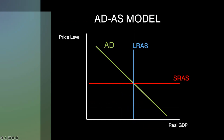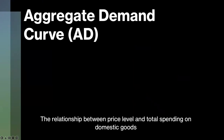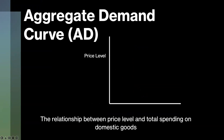The intersection of these three curves is also considered to be the long-run equilibrium. Beginning with the aggregate demand curve, it represents all domestic spending, including that of consumers and businesses, as well as that of the government and the total net exports.